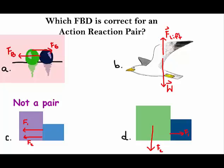C is not correct, because one object is exerting two forces on the other. D is not correct, because the objects aren't actually exerting forces on each other.